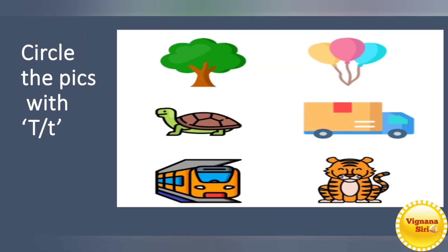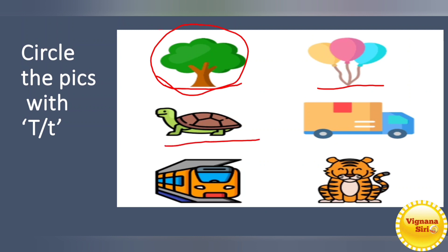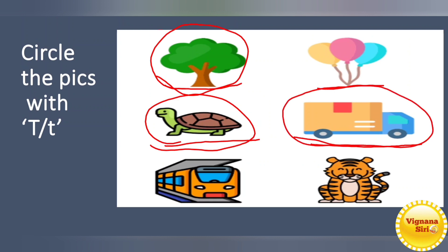Circle the pictures with T. The first picture — it's a tree, so T for tree, we will circle it. This is balloons. This is tortoise — T for tortoise. This is called truck — T for truck; lorry is different, truck is different. T for train — we will circle it. The next one, T for tiger. Tiger is the national animal of India, so T for tiger.